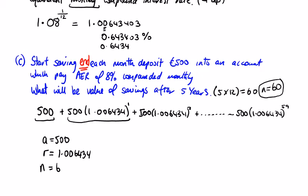So the sum of n payments, or the sum of 60 payments, is a, you've proved it already, 1 minus r to the power of n over 1 minus r. So the sum is 60 payments: £500 by 1 minus 1.006434 to the power of 60 divided by 1 minus 1.006434.